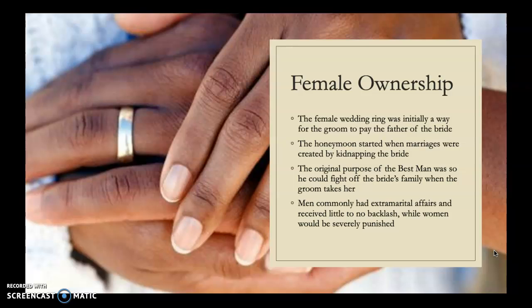Female ownership and purity are very prominent in the history of weddings. The female wedding ring was initially a way for the groom to pay the father of the bride — equating the person to a tradeable commodity. The honeymoon, interestingly enough, started when marriages were created by kidnapping the bride. Males would kidnap the woman they wanted to marry and hide away with her so she wouldn't be found and they could stay married. That is why the honeymoon initially started — the original purpose of getting away after marriage was due to a woman being kidnapped.